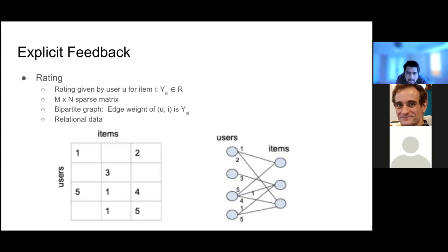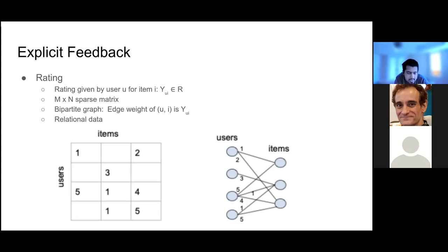First we'll look at explicit feedback. Suppose there are m items, and a single user would give ratings for those items. Since the number of items is very large, most likely the user won't be able to rate all of them, so it would be a sparse data set. Assuming we have m users, this can be represented as a matrix, where m is the number of users, n is the number of items, and ratings are on a scale of one to five.